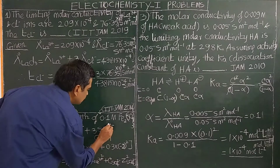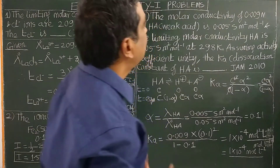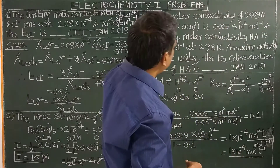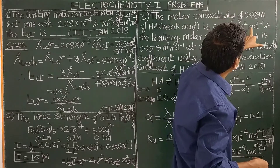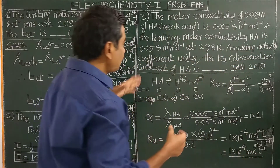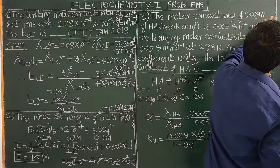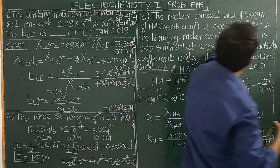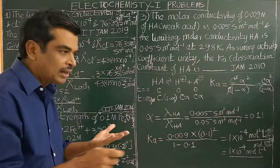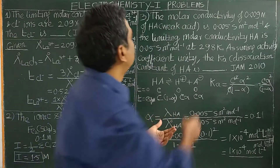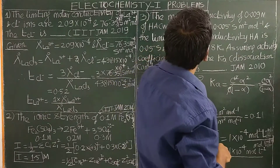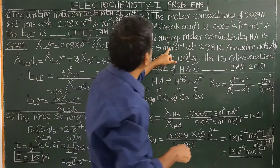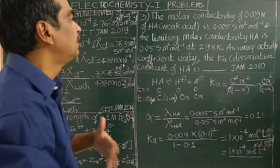Now let us see another problem based on degree of dissociation. The molar conductivity of 0.009 molar of a weak acid (HA) is 0.005 Siemens m² mol⁻¹. This is measured by preparing the 0.009 molar solution in a beaker, dipping the conductivity cell, and measuring using a conductivity bridge. The limiting molar conductivity λ°(HA) = 0.05 Siemens m² mol⁻¹, obtained from Kohlrausch's law.